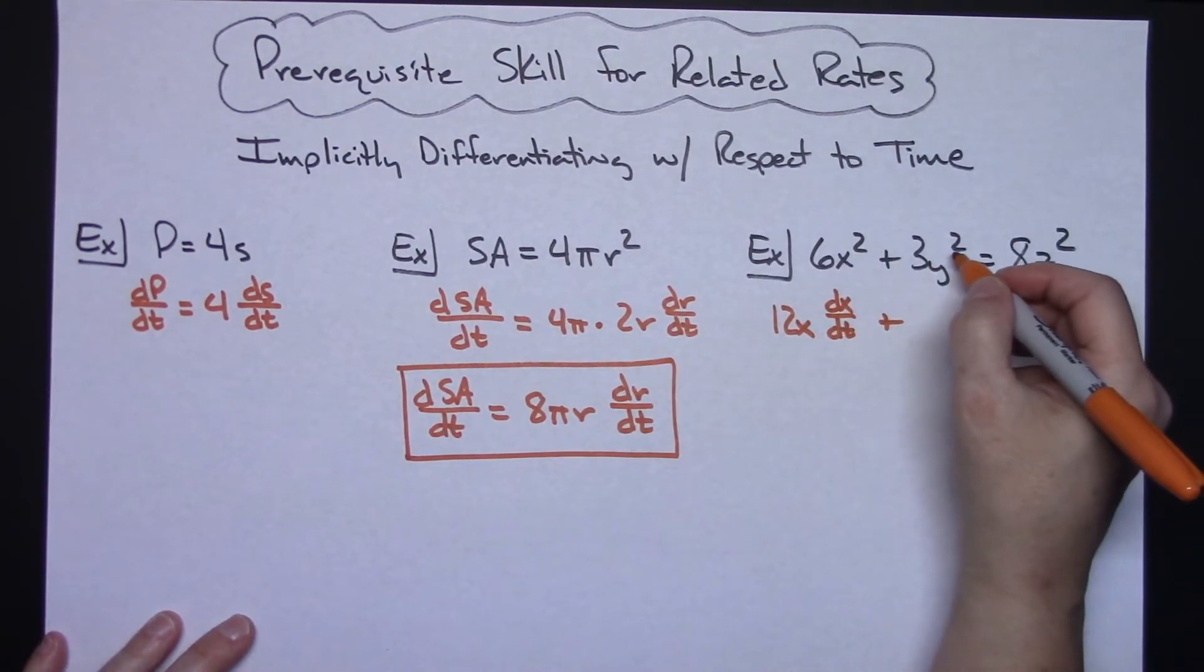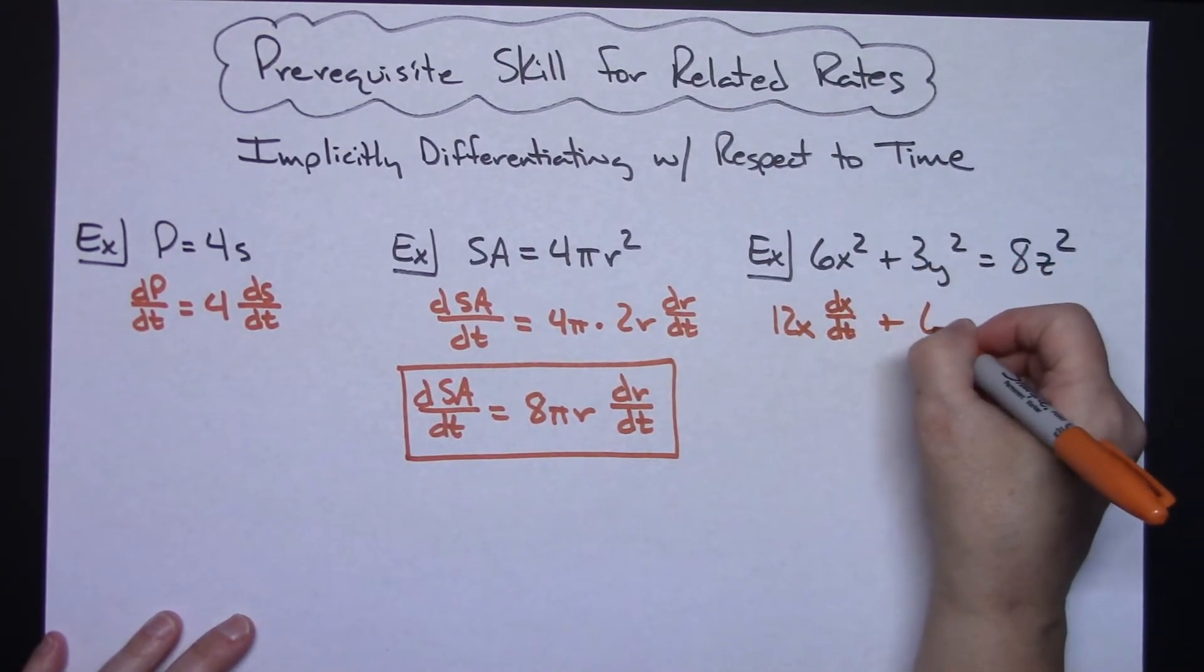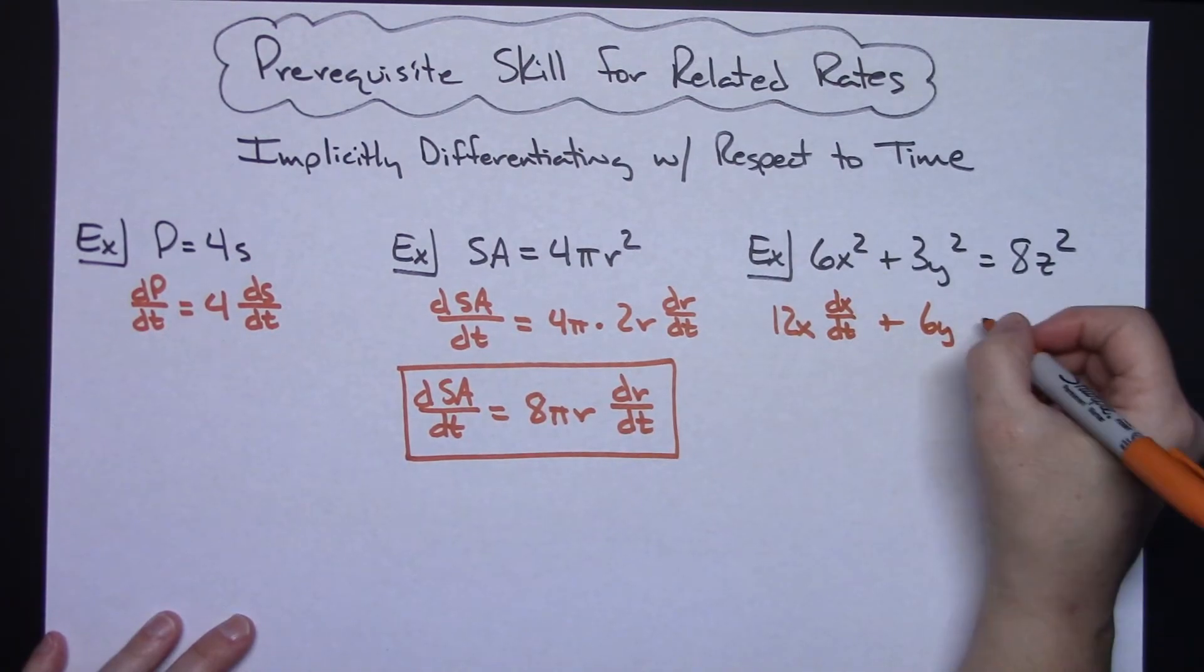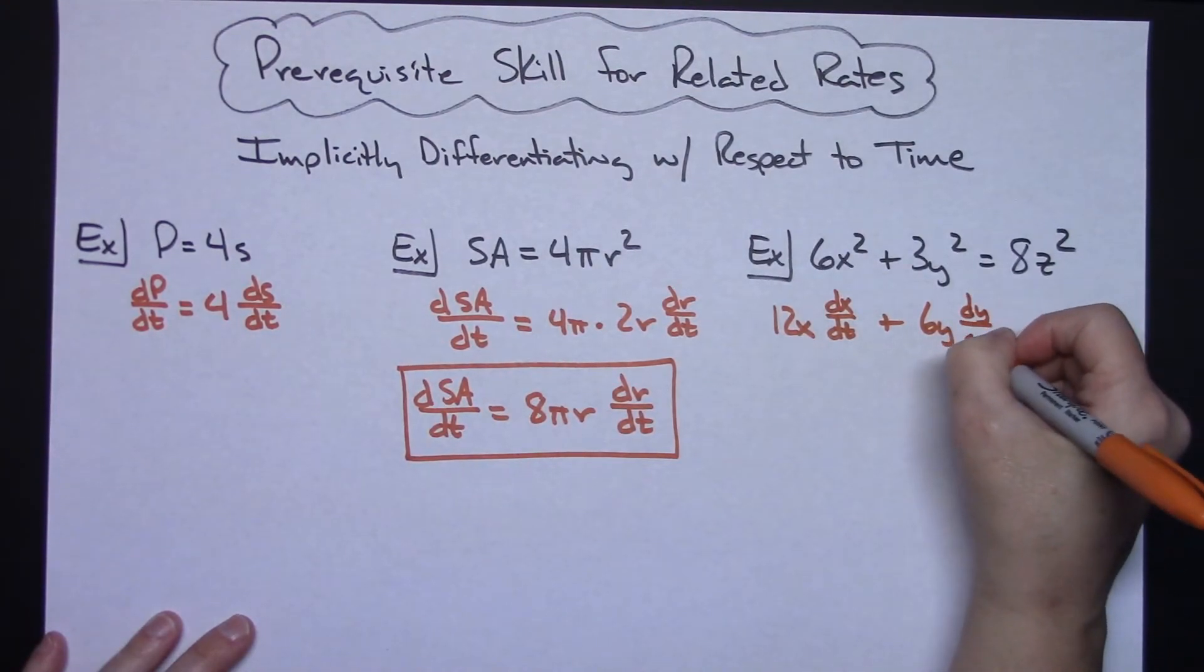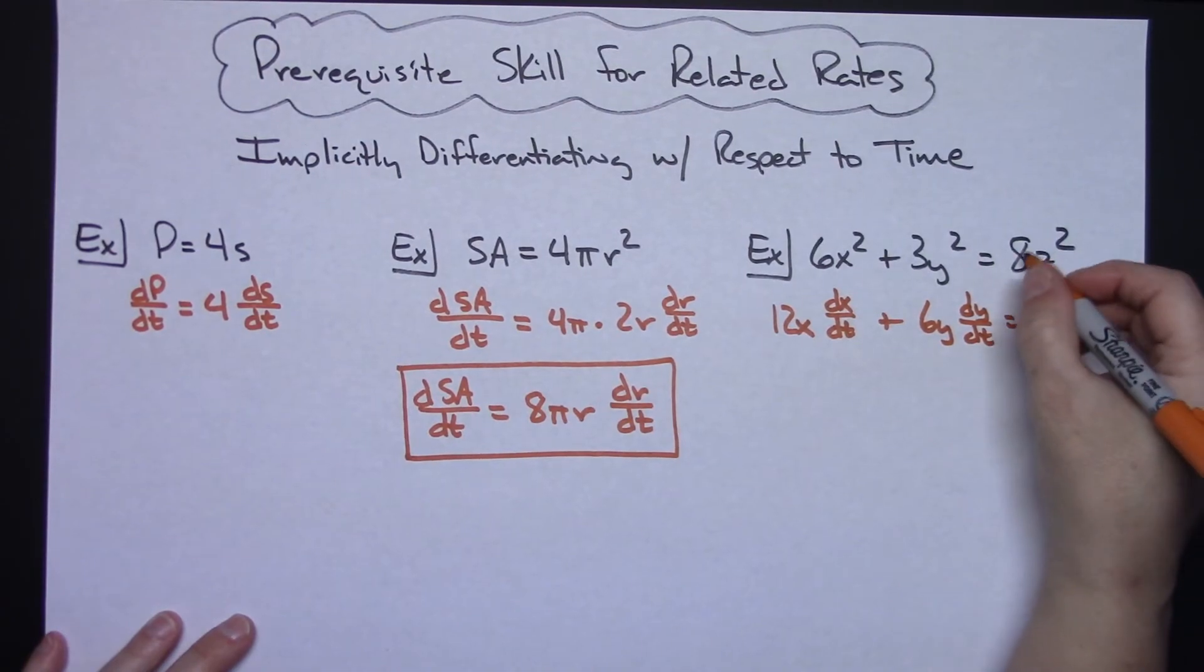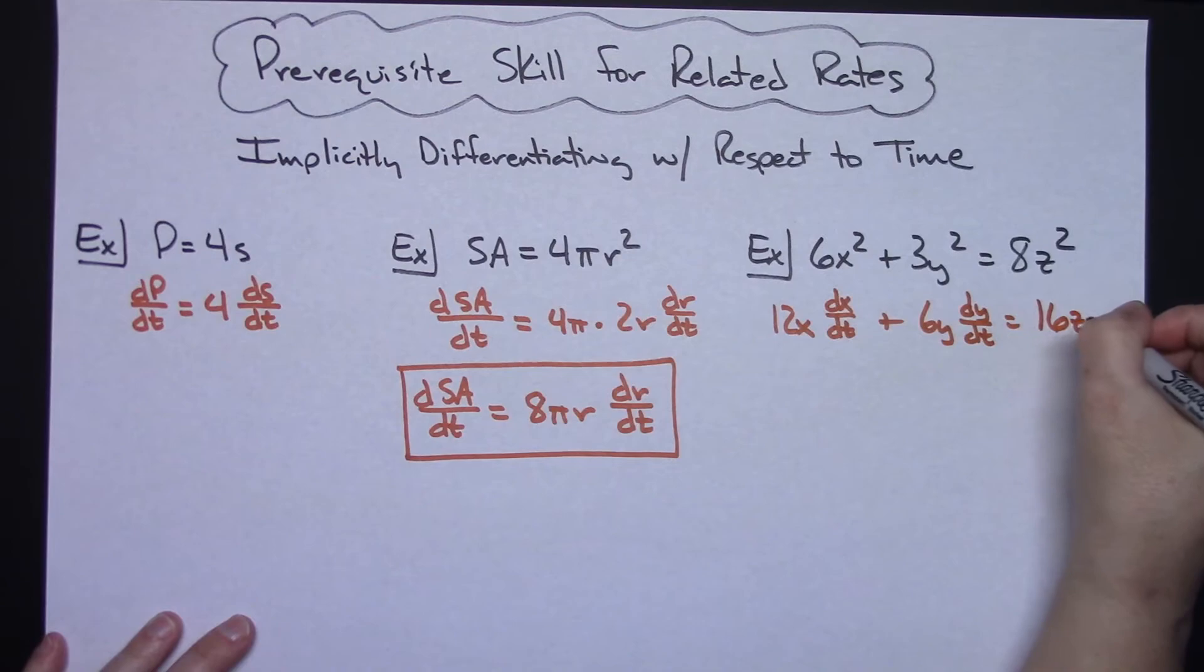Differentiate this: 3 times 2 is 6, so 6y and then with respect to time dy/dt equals, pull the 2 down, that would be a 16z and with respect to time dz/dt.